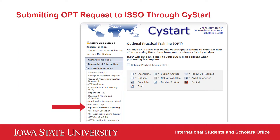Under the F1 student services tab, fill out the optional practical training request form. Once the form is submitted and your academic advisor or major professor has verified the information, the ISSO will issue your new OPT I-20. This can take the ISSO 10 working days to complete.